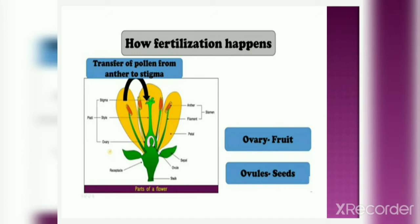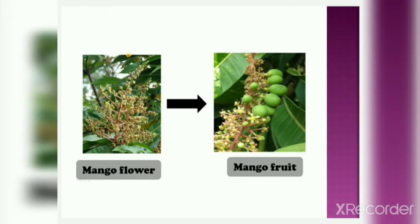After fertilization, the ovary will swell. It will gradually become bigger and bigger in size and it will turn into a fruit. For example, you can see the mango flower in the picture. First, the pollens from the anthers will be transferred to the stigma of the flower, then fertilization will happen in the ovary where the pollen grains will fertilize the eggs. After fertilization, the ovary will swell and gradually turn into a delicious mango fruit, and the ovules will turn into seeds. This is how fertilization happens.